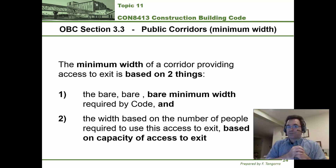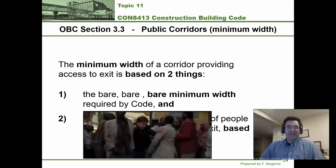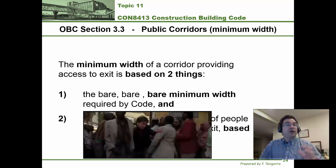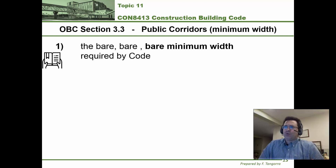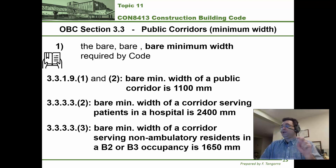The second criteria is based on the occupant load — all the expected people using that floor space. It's illustrated by the fact that the width is required to accommodate being full of people while still allowing them to access and make their way to the exit. The bare geometric minimum for a single person to make it through a corridor is detailed in sentences 3.3.1.9.1 and 3.3.1.9.2.